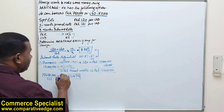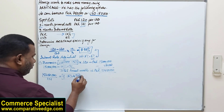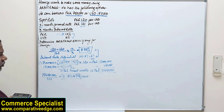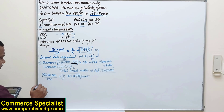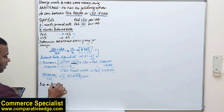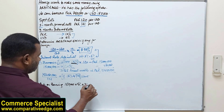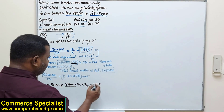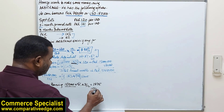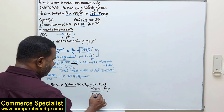Now remember this amount. He originally borrowed 150,000 USD, and after 3 months he has 152,479 USD. Since he borrowed in USD, he has to pay 5% interest. The interest on 150,000 USD at 5% for 3 months is USD 1,875.